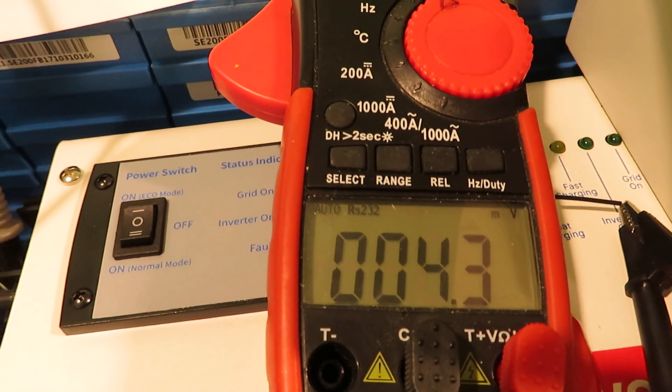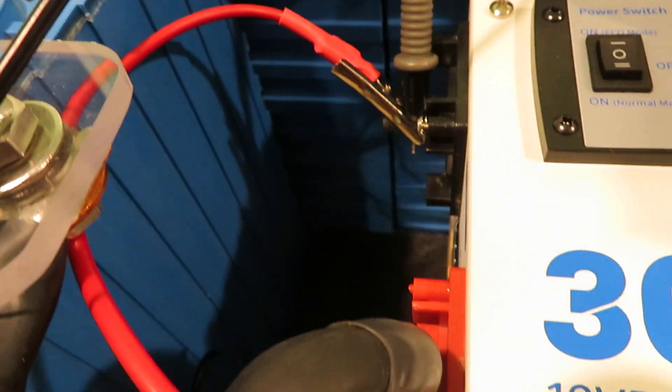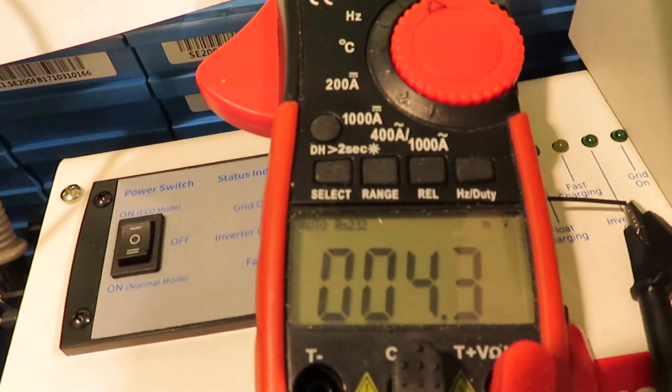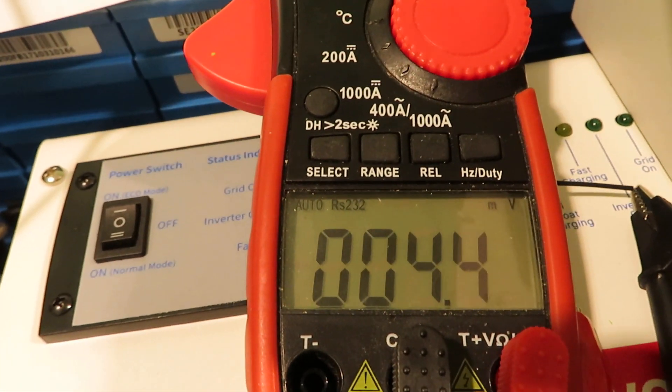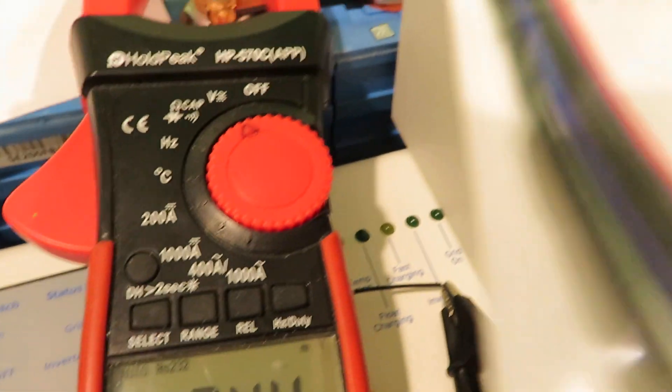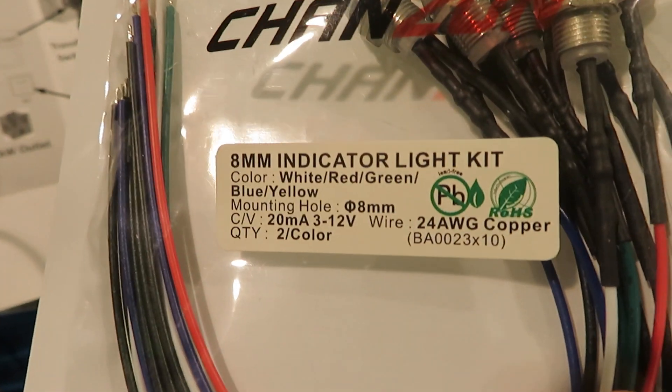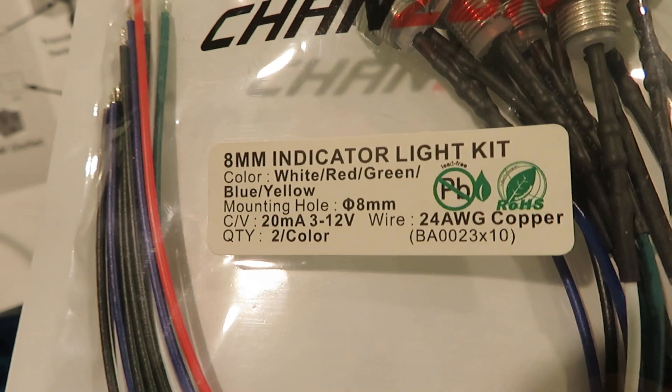My setup is I have a voltmeter looking at the terminal voltage of the inverter. Right now it's about 4 millivolts, and this is the LED I'm using - it's a 12 volt LED, 20 milliamps.